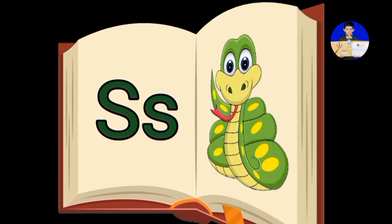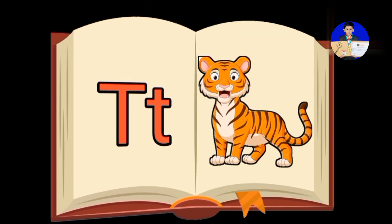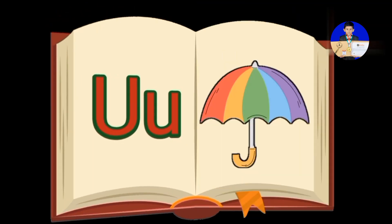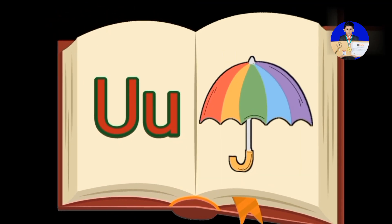T is for Tiger. U is for Umbrella. V is for Vulture.